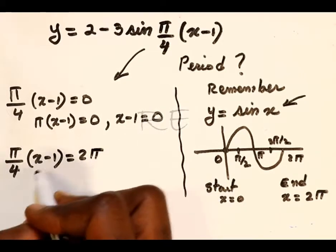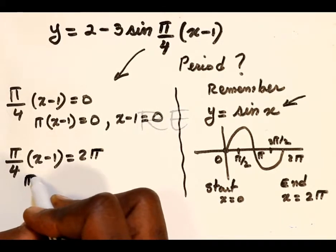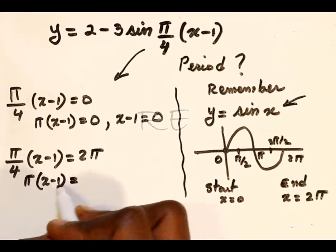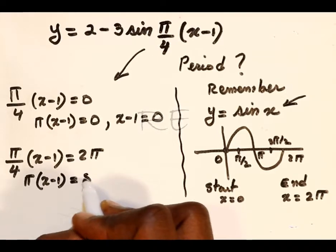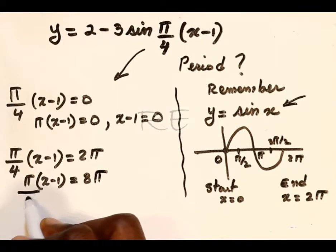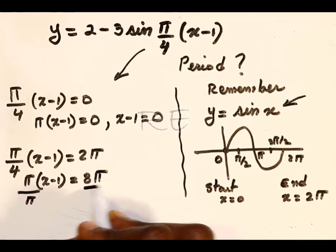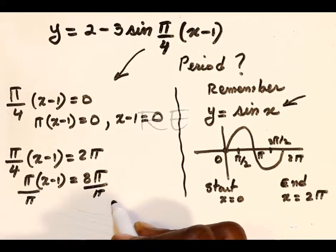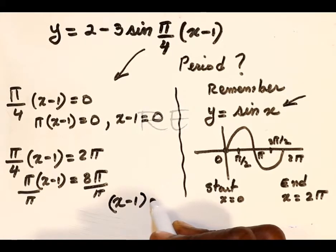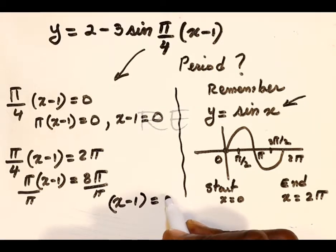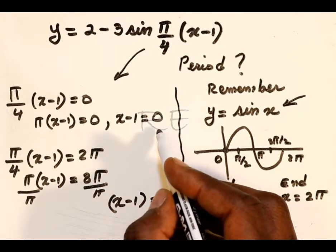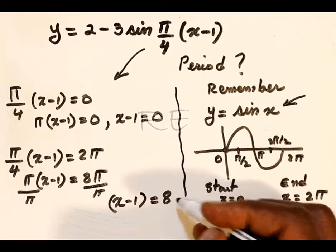For the end, π over 4 times x minus 1 equals 2π. That's where it ends. π times x minus 1 equals 4 times 2π, which is 8π. We're going to divide by π, and x minus 1 equals 8. It ends at x minus 1 equal to 8, which is x equal to 9. So 9 minus 1 will be 8. To make it easier, 8 minus 0 is just 8.